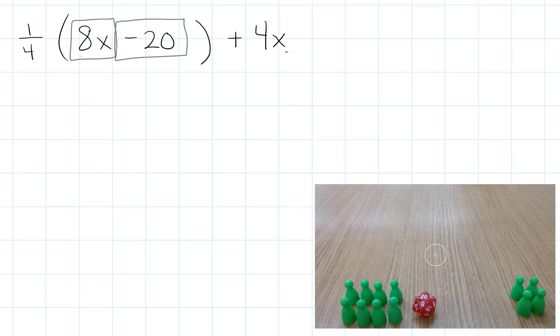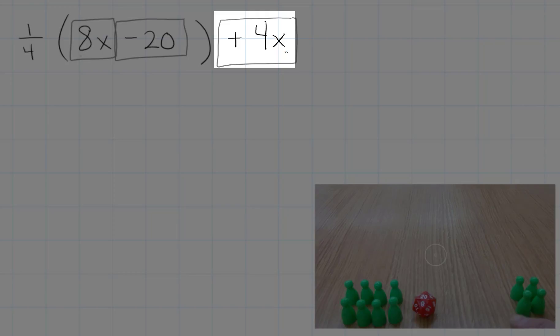Now, outside of the parentheses, which we're not going to distribute 1 fourth to, is 4 positive x's. So we're going to put those off to the side by themselves, because they're not really going to get touched.